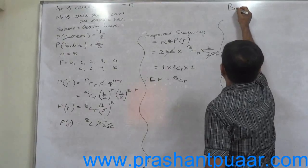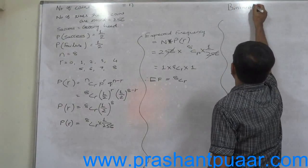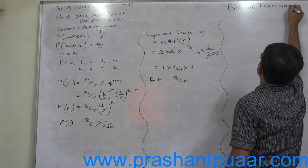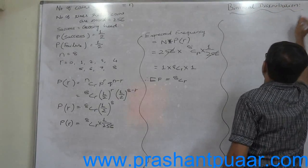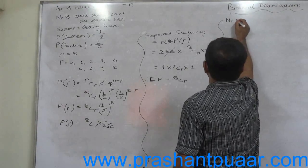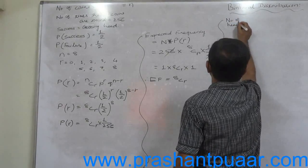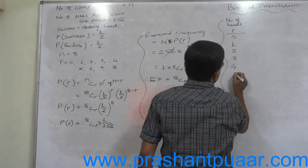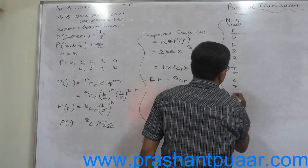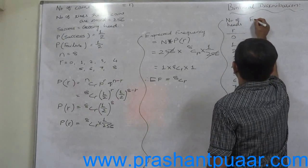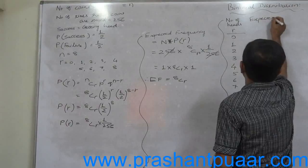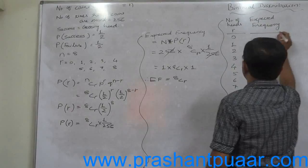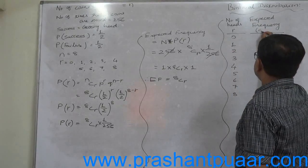Now to get any expected frequency we just require to substitute the 9 possible values of R. Number of heads, that is R: 0, 1, 2, 3, 4, 5, 6, 7, 8. Expected frequency, that is nothing but 8CR.